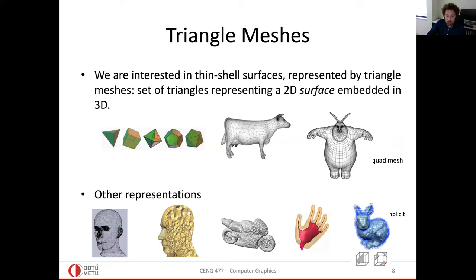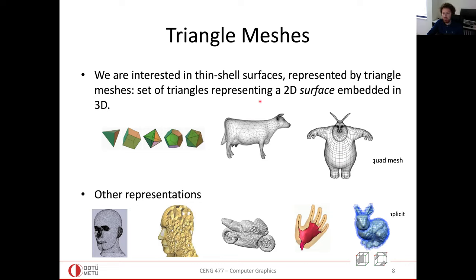These are all polygon meshes. The one in the middle is a triangle mesh because the polygon in use is a triangle. This one is a quad mesh because the polygon is a quad with four sides. Here we have pentagons, and a hybrid of polygon types in one mesh is also possible.